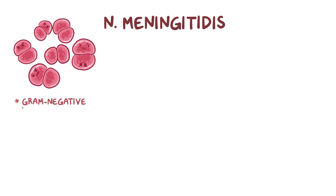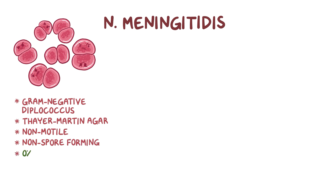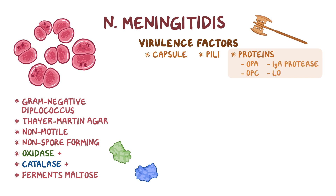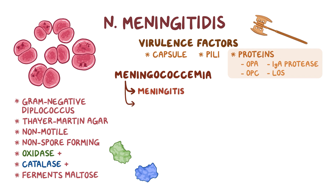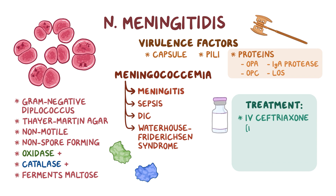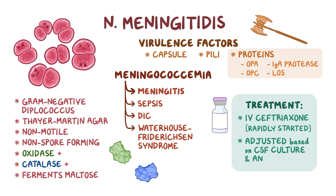As a quick recap: Neisseria meningitidis is a gram-negative diplococcus that grows on Thayer-Martin agar. It is non-motile, non-spore-forming, oxidase positive, catalase positive, and it can ferment maltose. Its virulence factors include the capsule, the pili, and proteins like OPA, OPC, IgA protease, and LOS. Meningococcemia mainly causes meningitis, but it can also result in other severe conditions such as sepsis, disseminated intravascular coagulation, and Waterhouse-Friderichsen syndrome. Treatment with intravenous ceftriaxone is rapidly started upon clinical suspicion, but the treatment can be adjusted afterwards as soon as the CSF culture and antibiogram are available.